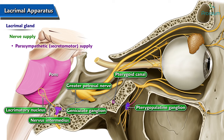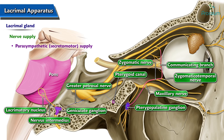The postganglionic fibers arise from the cells of the pterygopalatine ganglion, pass through the maxillary nerve, reach the zygomatic nerve, then the zygomaticotemporal nerve, and finally the lacrimal nerve to reach the lacrimal gland.